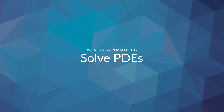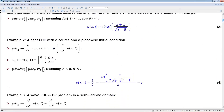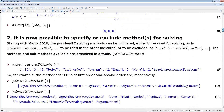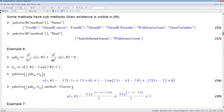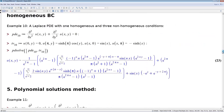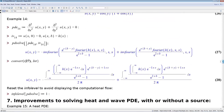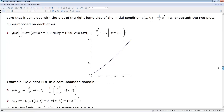Maple is a clear leader in finding symbolic solutions to partial differential equations, and with Maple 2019 the gap just got bigger. Maple 2019 includes significant improvements that further strengthen Maple's ability in finding exact solutions to partial differential equations, including additional methods for solving new classes of problems, more flexibility in choosing the methods to try, and improved simplification of the results.